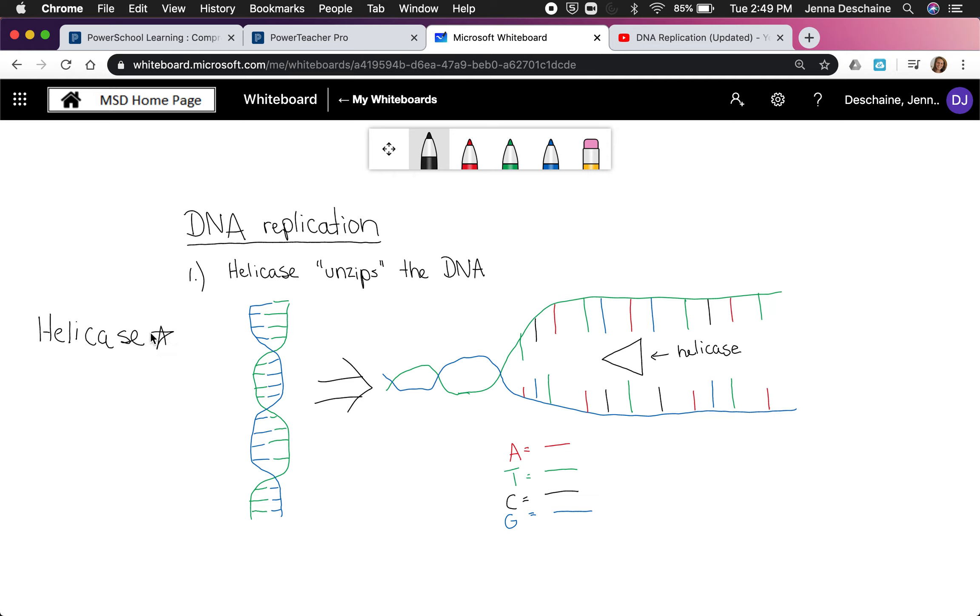Helicase is the star of the show in the first step of DNA replication. Remember, this is the process that allows us to copy DNA so it can be ready to go once cells are ready to divide. There are four different enzymes that I'm going to highlight in DNA replication, and the first one is helicase. If you remember from the video introducing the four different enzymes, helicase is the unzipper.